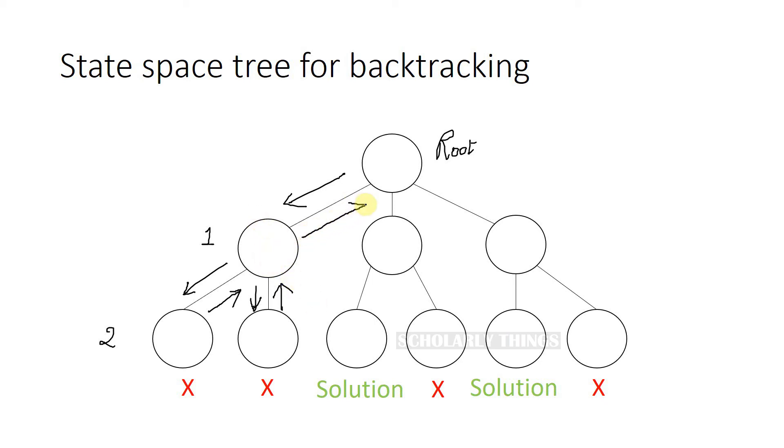After you come back to this node, the other option is for you to check this node. So you go here, the constraint is checked, and then you go to another node. So at this point, you might find a solution.